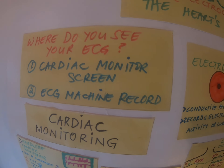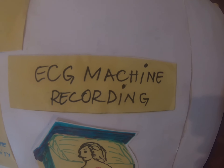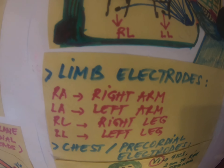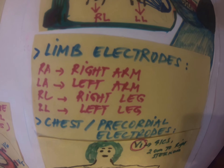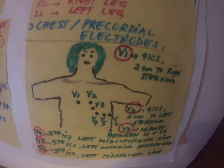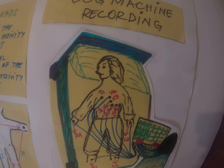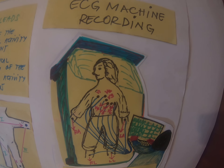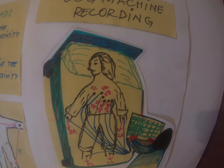The 12-lead ECG provides another view. The electrodes for the limb leads are applied on the right arm, left arm, right leg, and left leg. The chest electrodes go from V1 to V6. In total there are 12 leads but only 10 electrodes. All 12 leads are viewing the same electrical activity, but they are coming from different angles.